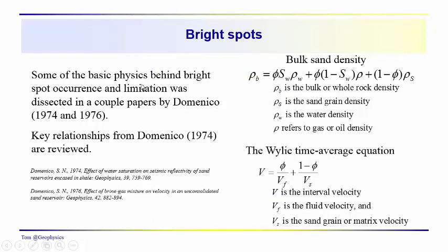And so a lot of the basic physics behind the bright spot occurrence and its limitations and its interpretations is dissected in a couple papers by Domenico in 1974 and 1976. We're basically going to focus on this paper here in 1974 and reproduce some of his calculations here. He uses, for example, a bulk density which is a function of the water saturation, the density of the gas or the oil, the fluid filling the pore space, and the sand grain density, the matrix density.